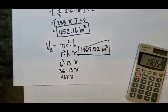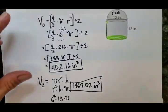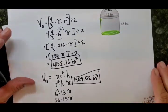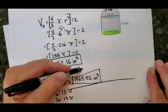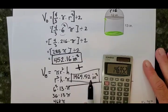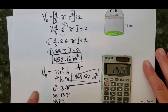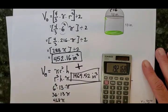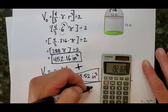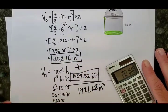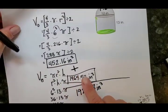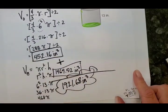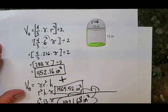We're almost finished. The last part is to combine those volumes. We found the volume of the half sphere and the volume of the cylinder. To get the total overall volume, we add them together. I already have 1,469.52 in the calculator, so I add 452.16 to it. That gives us 1,921.68 cubic inches. That would be the overall total volume of this composite three-dimensional figure.